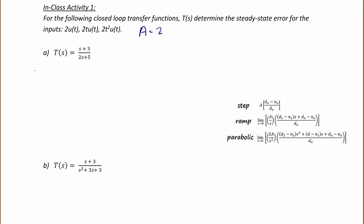First, let's do the step for T(s) = (s + 3) / (2s + 5). That's going to be the amplitude 2 times (d0 - n0) / d0, so that's 2 times (5 - 3) / 5. So for a step, the steady state error is 4/5.